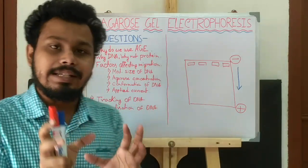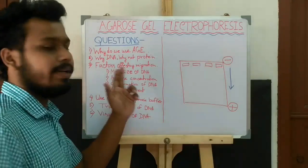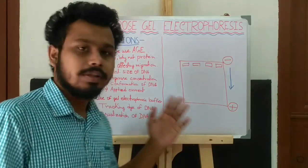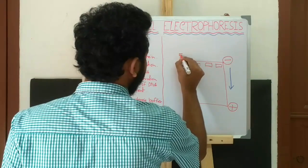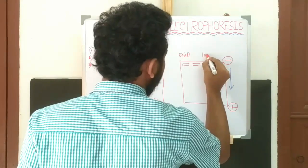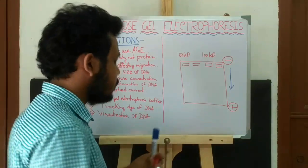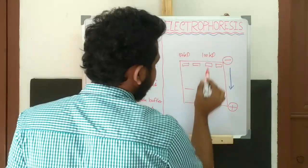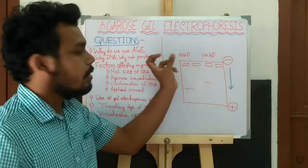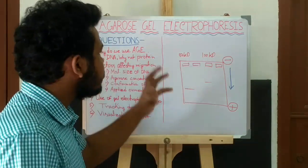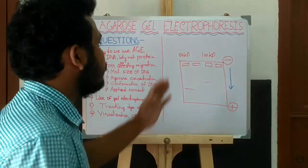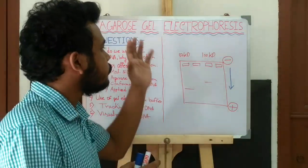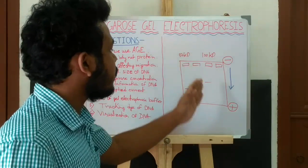Now, factors affecting migration. First, the molecular size of DNA — the larger the DNA molecule, the less it will migrate in the agarose gel. Suppose a 50 kb DNA fragment and a 100 kb DNA fragment are added to the agarose gel: the 50 kb fragment will migrate more and the 100 kb fragment will migrate less, because the 50 kb fragment faces less resistance and passes easily into the agarose gel pores, while the 100 kb fragment gets stuck in the pores more often.